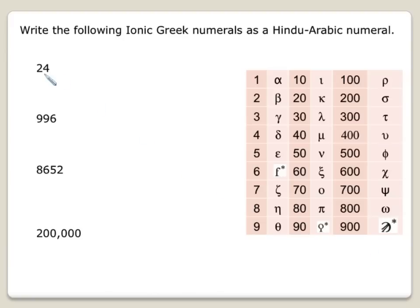Alright, so let's try some of these. 24. So all we have to do is find the symbol that represents 20, and then the symbol that represents 4, and then write them next to each other. So 20 is our kappa right here. And then 4 is our delta. So there's the number 24.